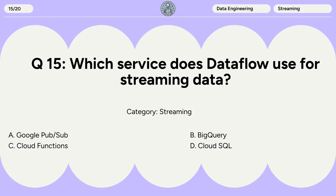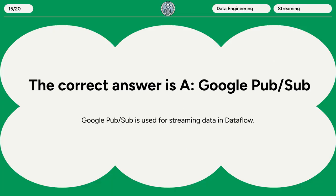Question 15: Which service does Dataflow use for streaming data? A. Google Pub/Sub. B. BigQuery. C. Cloud Functions. D. Cloud SQL. The correct answer is A. Google Pub/Sub. Google Pub/Sub is used for streaming data in Dataflow.